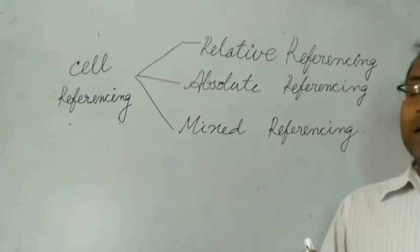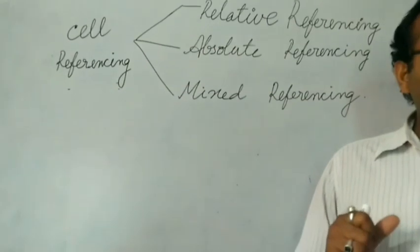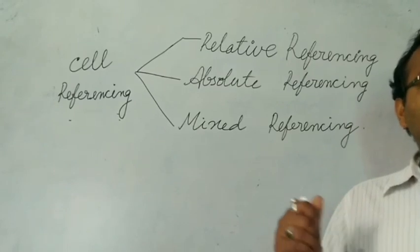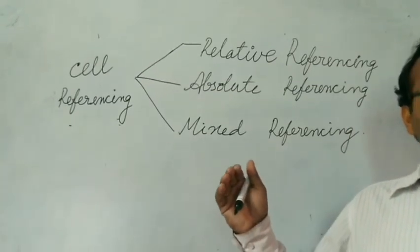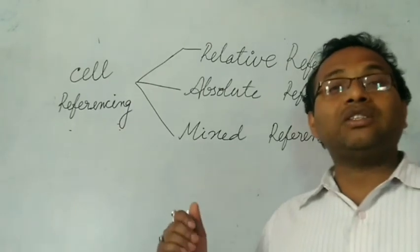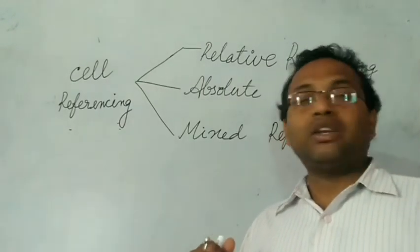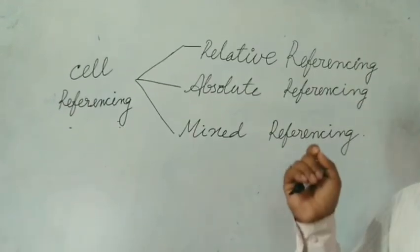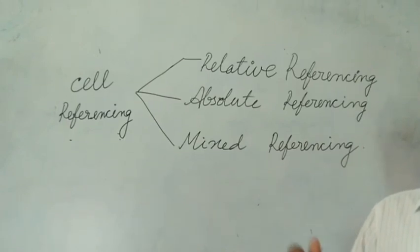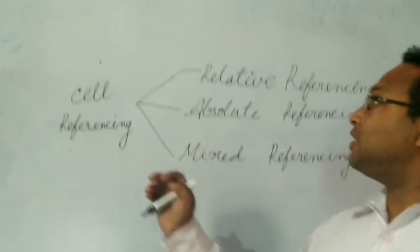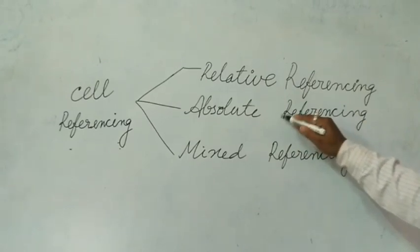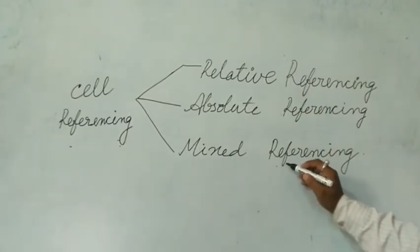Cell referencing means in MS Excel you can do calculations automatically. Suppose you write a formula in one cell and drag the formula with the help of the mouse — the corresponding formula or values will be copied. This saves our time. For example, if you want to find out the average of your class, you write the formula in one cell, drag it, and you get the answer. Cell referencing is of three types: Relative Referencing, Absolute Referencing, and Mixed Referencing.